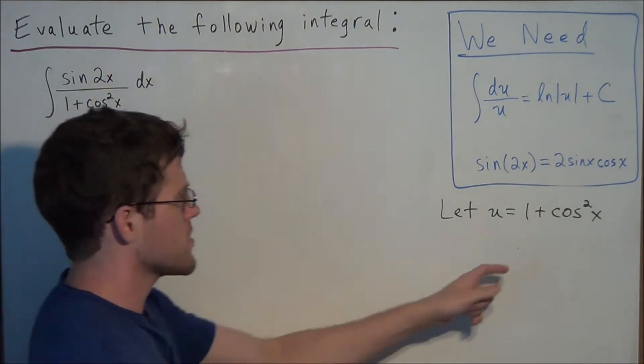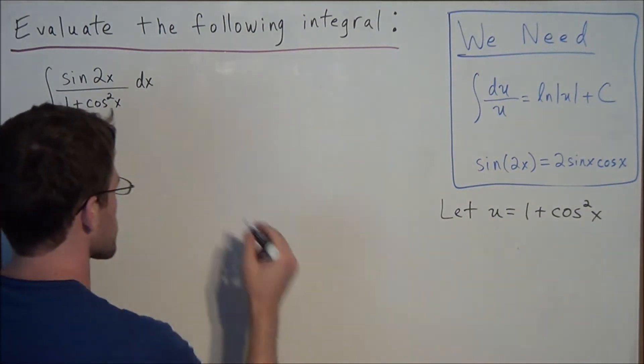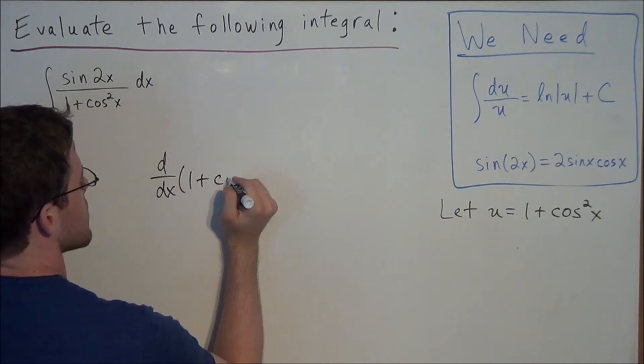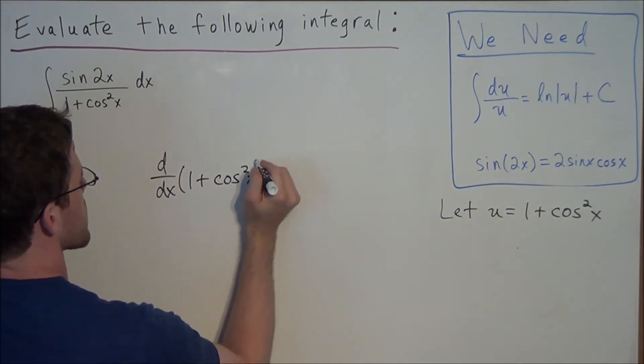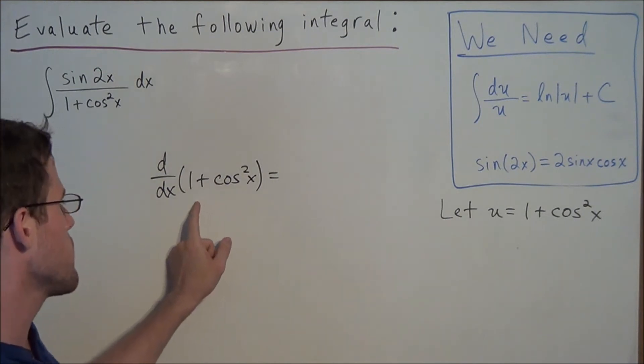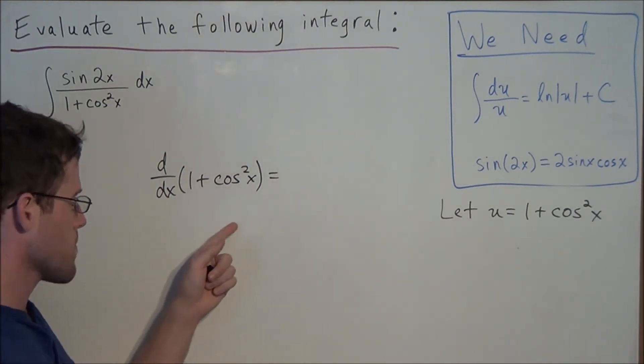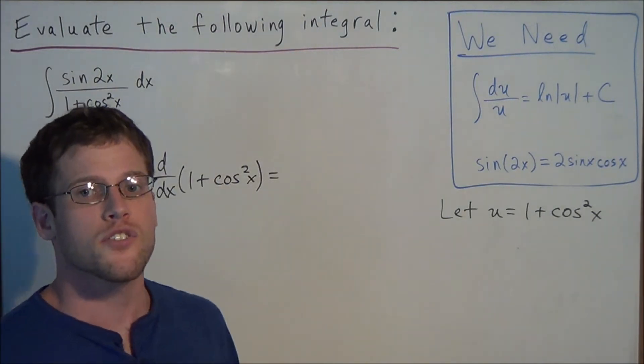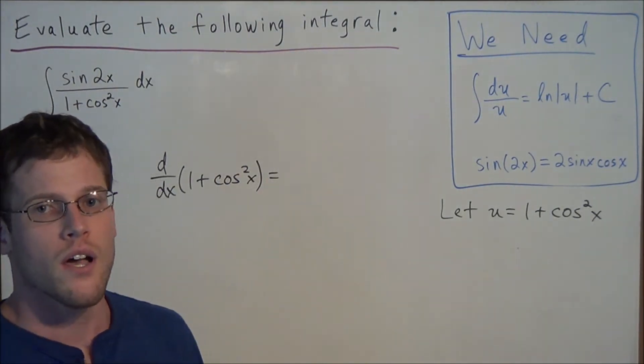So off to the side, we could see that the derivative with respect to x of 1 plus cosine squared x is equal to, for the first term, the derivative with respect to x of 1 is 0, but now we find the derivative of cosine squared x. This is where we need to use the power rule and the chain rule.